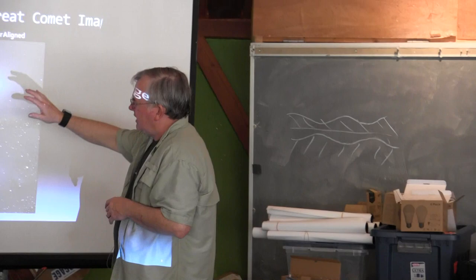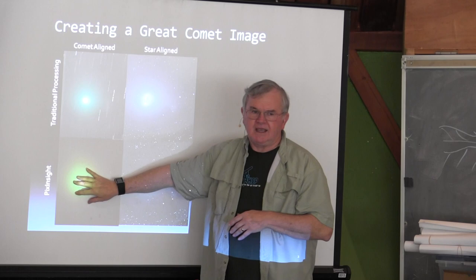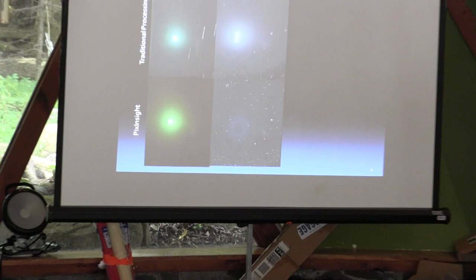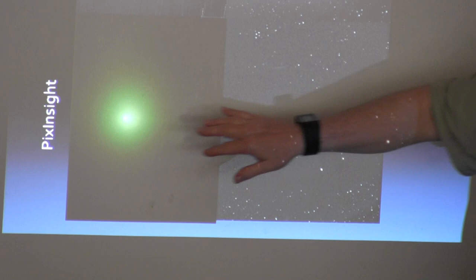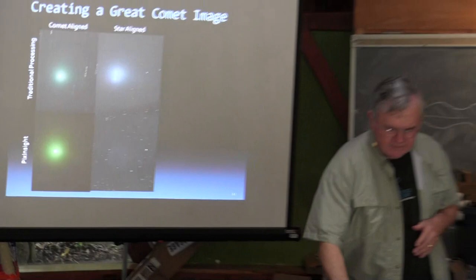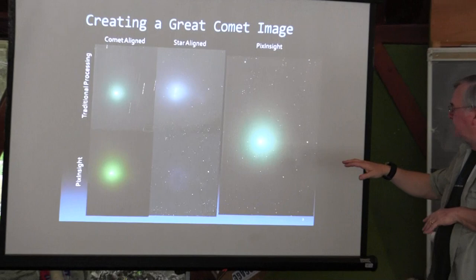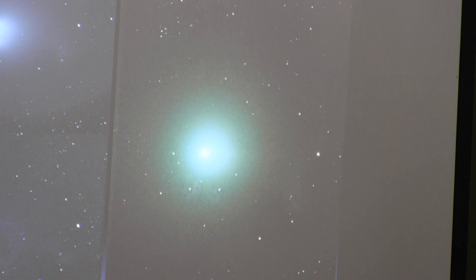By using PixInsight — this is comet Wirtanen — you create a picture of the comet with no stars. It automatically processes it in such a way that it just brings out the comet. Then you do the same thing and subtract that comet from each of the pictures, so you get a picture of just the stars. Once you've done that, you can superimpose one on the other and get a nice picture of the comet in the field of stars, just as you would see with a really big telescope.